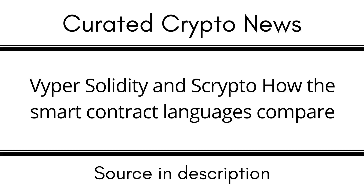In simple terms, programming languages enable computers to understand instructions input by human beings. In the blockchain industry, Solidity, Python, and JavaScript are some of the most commonly used languages, yet they all work differently. Solidity is an object-oriented, high-level programming language for building smart contracts on the Ethereum blockchain and other networks like BNB Smart Chain and Avalanche. The language was developed in 2014 and shares similarities with JavaScript, C++, and Python.